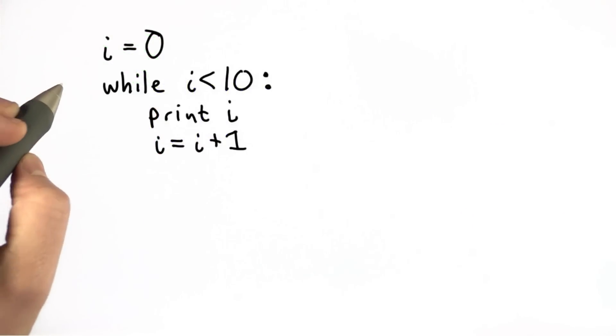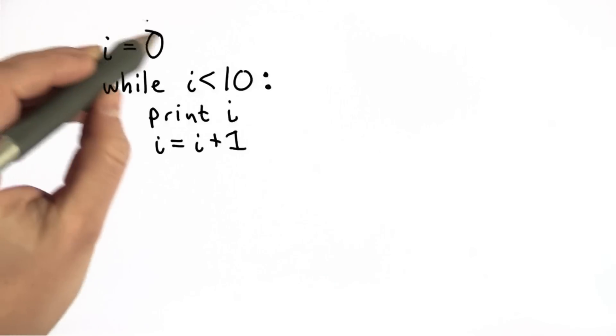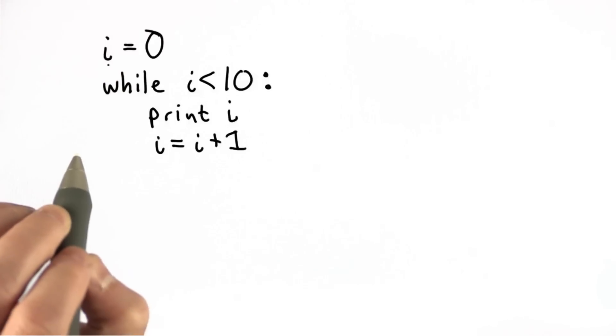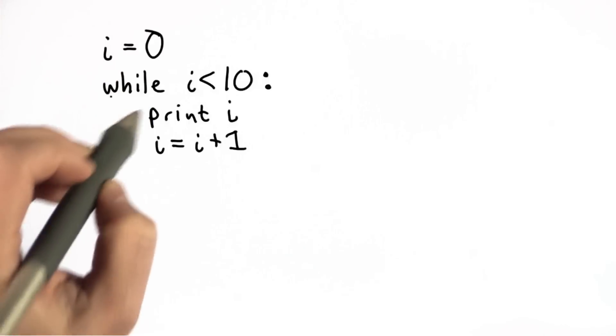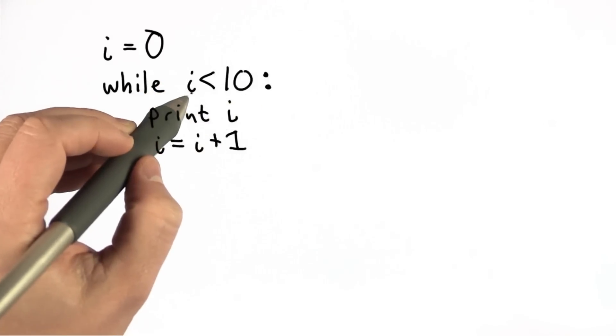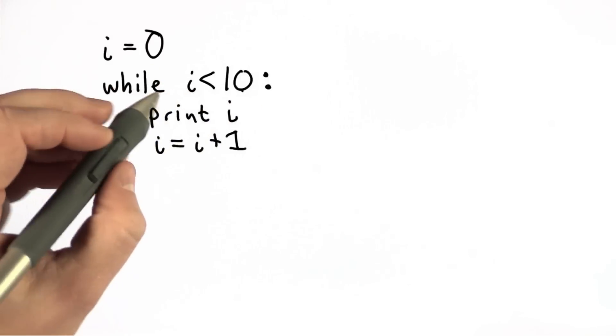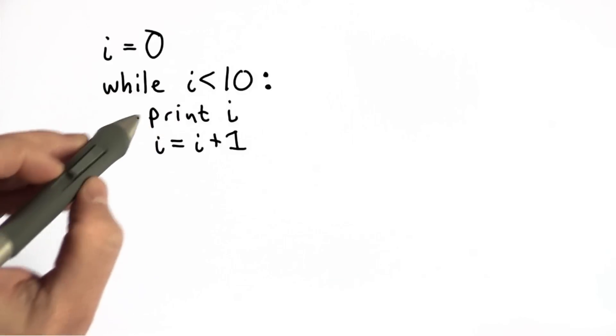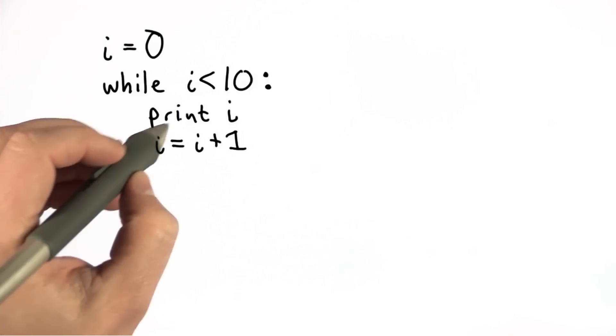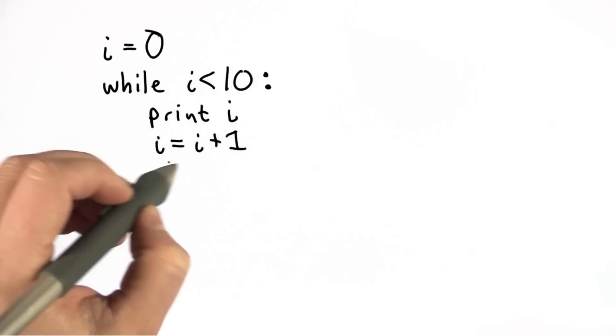So here's an example while loop. We start by initializing the variable i and we'll give it the value 0. Then we have the while. The test expression says i is less than 10. So that means as long as this evaluates to true, we'll evaluate the block. And what the block does is print i and then add 1 to i.